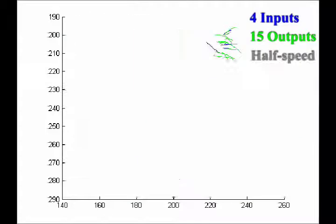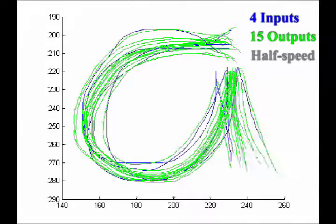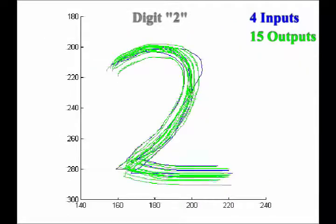Note the spatial and temporal variations in the green outputs. Here are results for the handwritten digit 2.